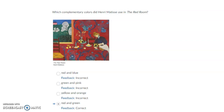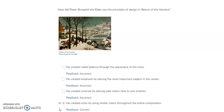Which complementary colors did Henri Matisse use in the Red Room? The answer is red and green — those are our complementary colors. How did Pieter Bruegel the Elder use the principles of design in Return of the Hunters? He created unity by using similar colors throughout the entire composition.